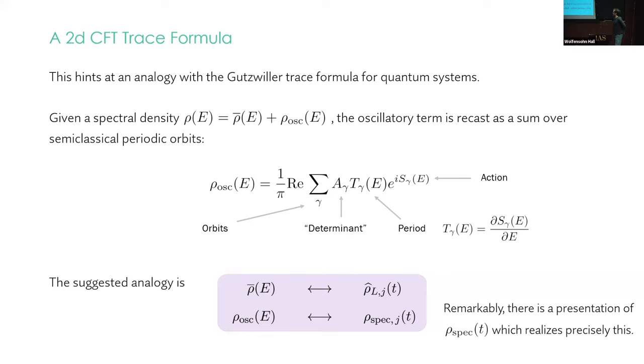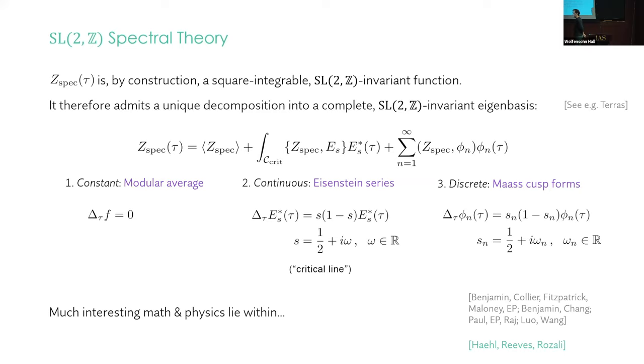So this hints at an analogy with the Gutzwiller trace formula for quantum systems. Which in a nutshell is the following. If we have some spectral density rho, we can split it into a rho bar, a mean density, and what's usually called this oscillatory piece, rho_os. And the oscillatory term can be recast as a sum over semi-classical periodic orbits. Gamma labels the orbits. There's an e to the i orbit action times the period, which is the derivative of the orbit action with respect to energy, times some determinant factor here. And so the analogy with what I've said is that this mean density is like this rho hat light, and this oscillatory density is like this rho spec. So we'd like to make this concrete. And remarkably, there's a presentation of rho spec which realizes precisely this. And that presentation explains why we call this rho spec.